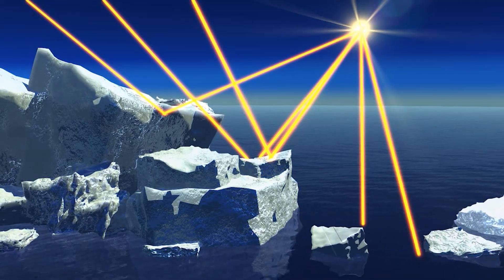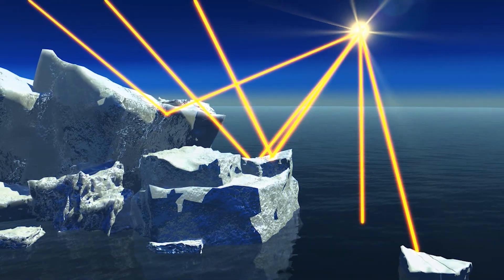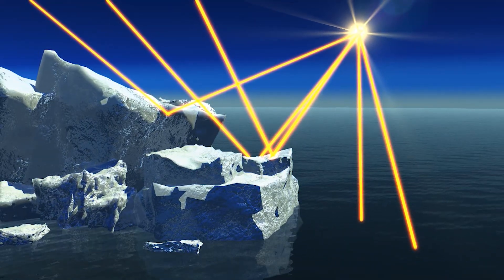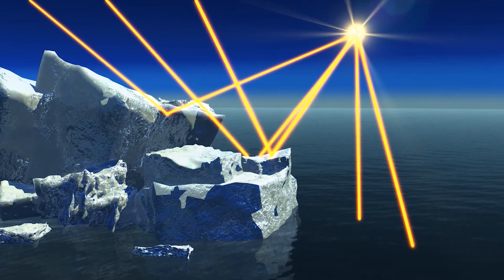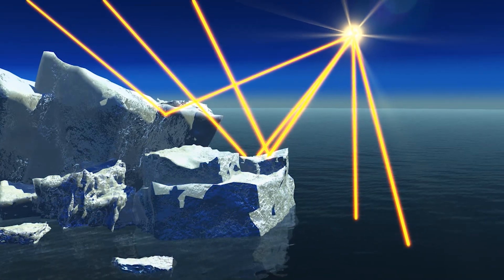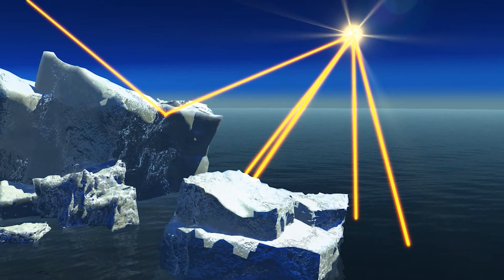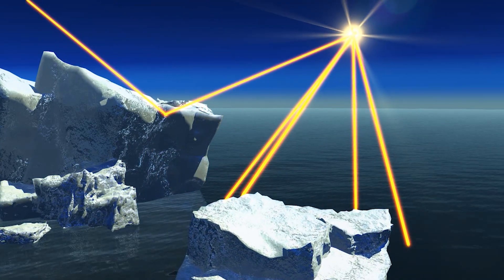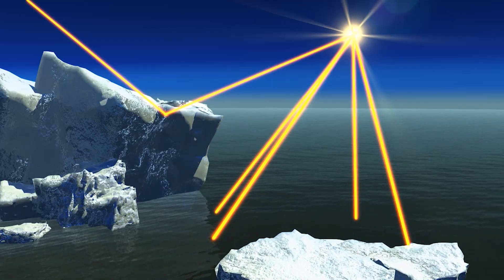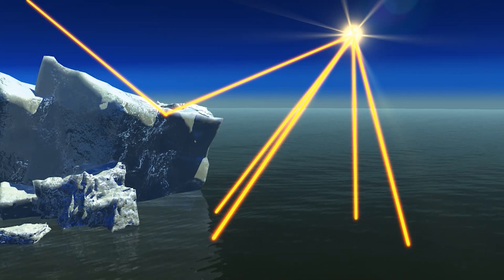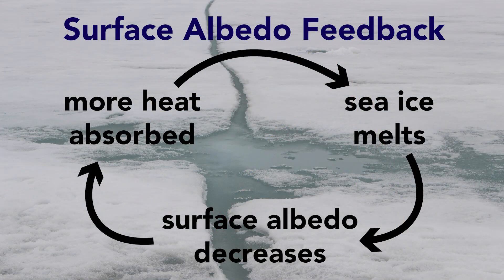As more sea ice melts, more dark water is exposed. More open water, in turn, leads to more sunlight being absorbed by the ocean. As the surface ocean absorbs more sunlight, more sea ice melts — and you get the picture. This whole process is called the surface albedo feedback.